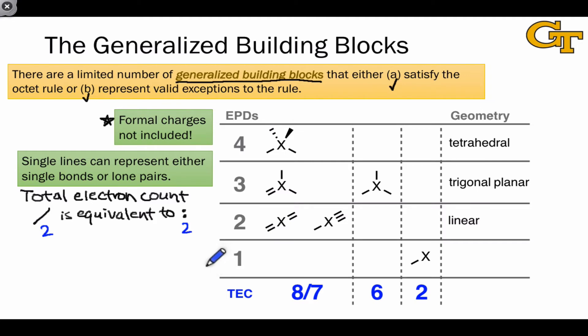When we start enumerating the particular building blocks in the next video, we'll add different numbers of lone pairs to these single bond positions in, for example, the tetrahedral building block. And that will give rise to different particulars that are really instances of the same generalized building block.